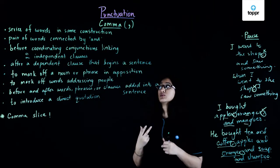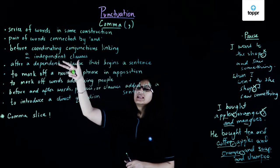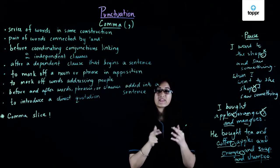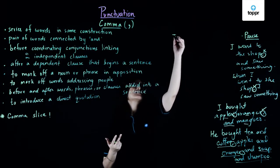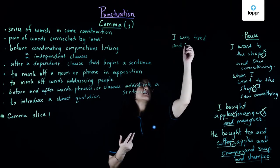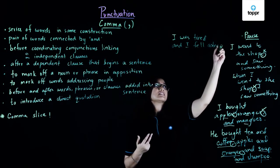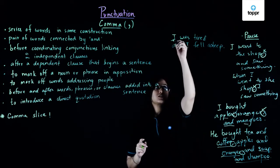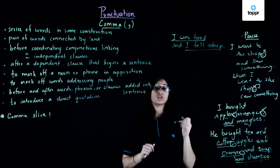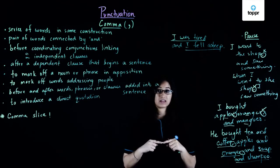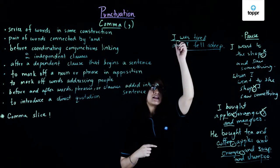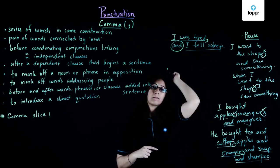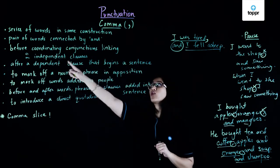Let's take a look at another place where we use the comma: before coordinating conjunctions linking two independent clauses. Those are clauses which make complete sense when they stand alone. For example: 'I was tired and I fell asleep.' I have two independent clauses — 'I was tired' and 'I fell asleep' — connected with the coordinating conjunction 'and'. When you have two independent clauses combined with a coordinating conjunction, we use a comma before the coordinating conjunction.